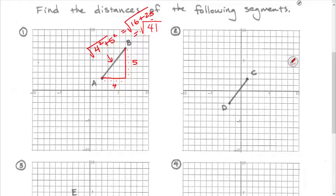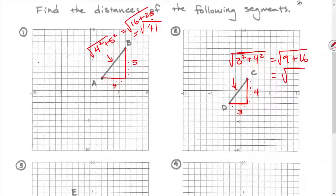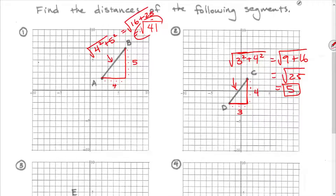For number two, I look at the horizontal difference — that's 3 — and the vertical difference — that's 4. This must be the square root of 3 squared plus 4 squared, which is the square root of 9 plus 16, which is the square root of 25, equal to the whole number 5. That's the quickest way to find distances in the coordinate plane.